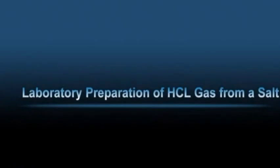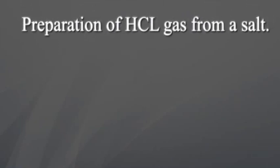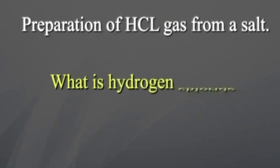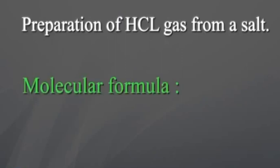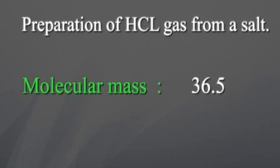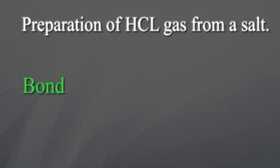Hello friends, today we will see laboratory preparation of HCl gas. First of all, let you know what is hydrogen chloride. Its molecular formula is HCl, molecular mass is 36.5, and it is formed with covalent bond.